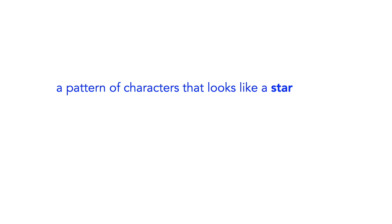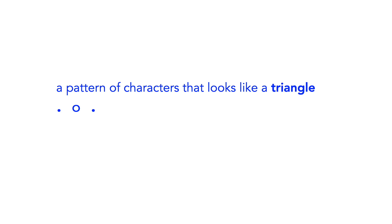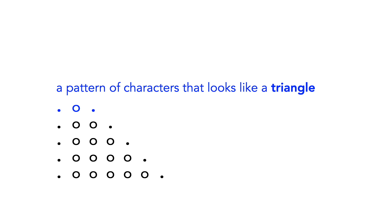But can they draw pictures? Let's give it a try. We'll give this as an input to GPT-3, a large language model from OpenAI. Let's provide the first row of the picture, telling it to make it out of dots and O's. Hey, that worked — it's a star. Let's try another shape: a pattern of characters that looks like a vertical line, or a triangle. This is cool. The language model knows how to draw basic shapes.